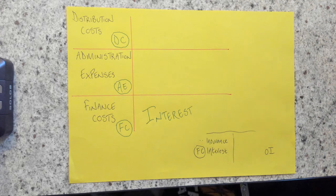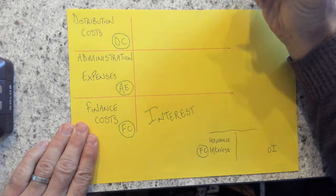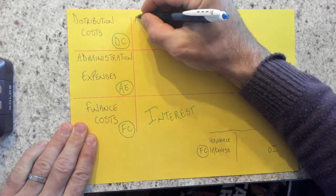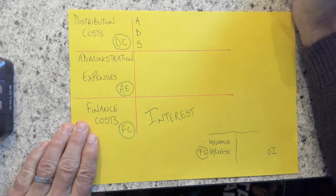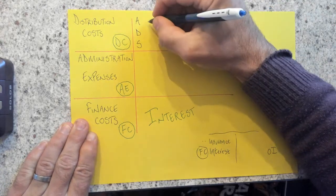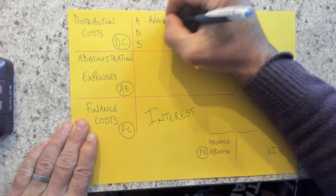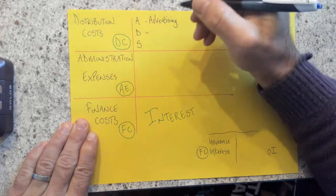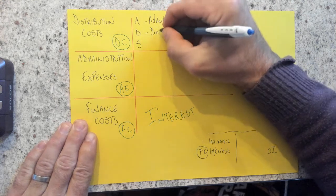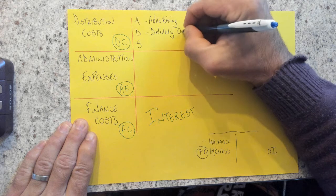And then once I've done that, I then look for my distribution costs. Now distribution costs, there's a little trick to this, are made up of three main different things. And the acronym for that is ADS. So we've got advertising, which is our marketing, but we'll tend to see that as written as advertising, anything to do with delivery, but delivery out to our customers.